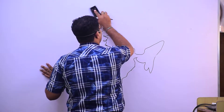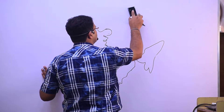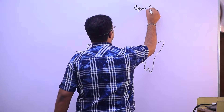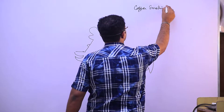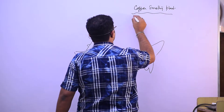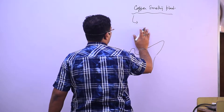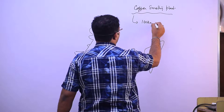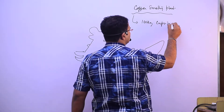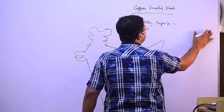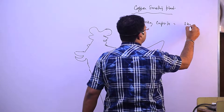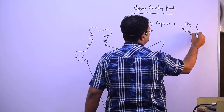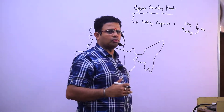Now let us see copper smelting plants in India. If I talk about copper ore yield: 100 kg of cuprite gives around 0.6 kg of copper. So the copper ore yield is very low.